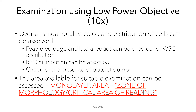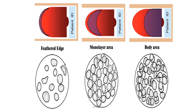The area suitable for examination of blood cells is called the monolayer area, or the zone of morphology, or the zone of critical area of reading. In this figure, you can see the ideal distribution found on the different parts of your blood smear. Notice that on the monolayer area, the cells are not clumped together or there is minimal clumping.